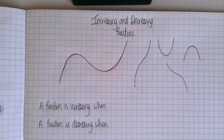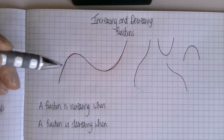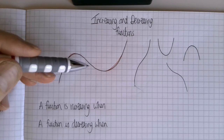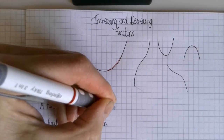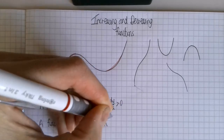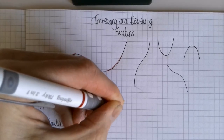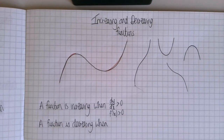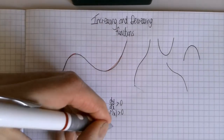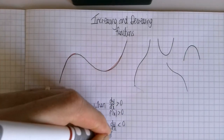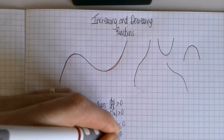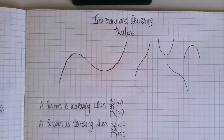How can we tell if a function is increasing or decreasing without looking at its graph? An increasing function has a positive gradient, and a decreasing function has a negative gradient. So a function is increasing when dy/dx > 0, or when f'(x) > 0 — those two notations mean exactly the same thing. A function is decreasing when the gradient is less than zero, i.e. negative. And of course when the gradient is zero, it is neither increasing nor decreasing — that is a turning point.